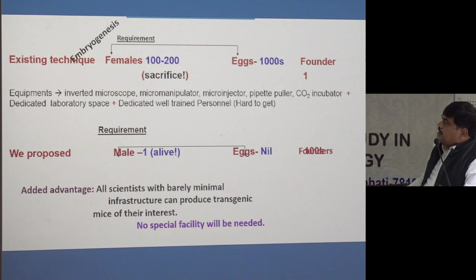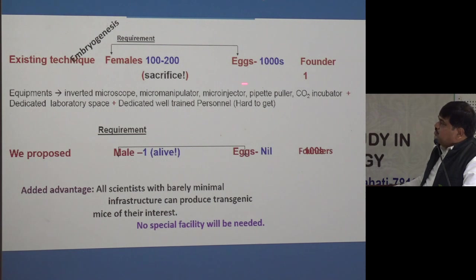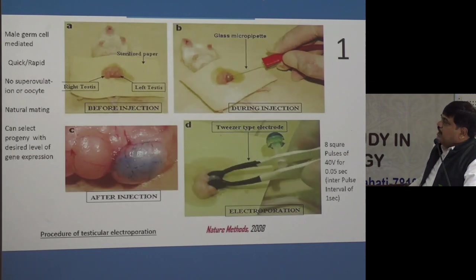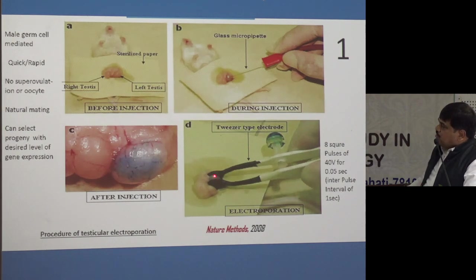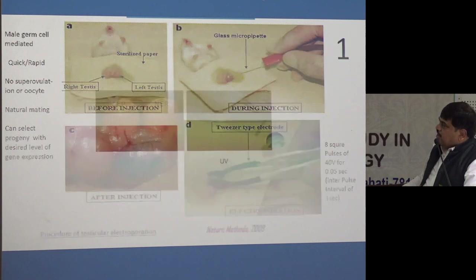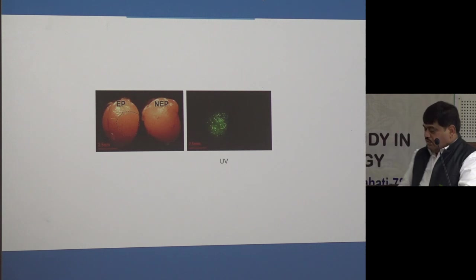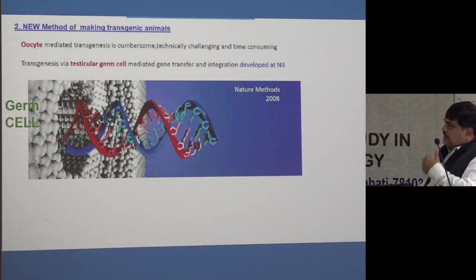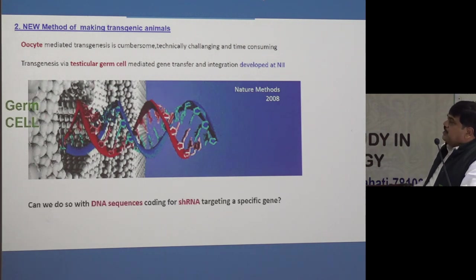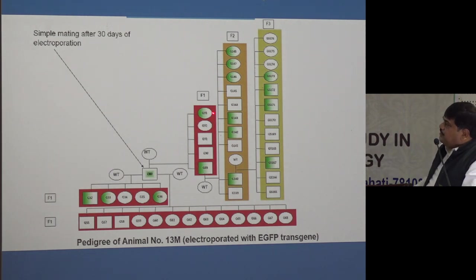Instead of using embryogenesis requiring 100-200 sacrificed females and thousands of eggs, we proposed using only one male who remains alive — no eggs required, normal mating is done, and several founders can be obtained. We tested this in mice: we injected the gene into the testis with trypan blue to confirm no leakage, then applied an electroporetic current. The testis that received gene plus electroporation showed green fluorescence (EGFP) under UV light, while the non-electroporated testis did not — indicating gene insertion is possible through the testicular route. The electroporated male was then mated with females, and half the offspring (green) were transgenic while the other half (white) were non-transgenic.